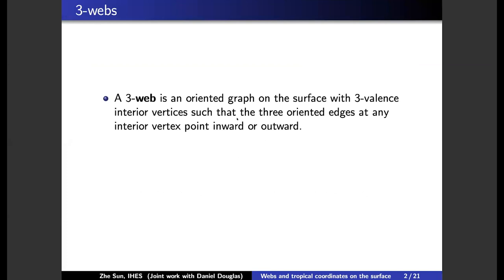A 3-web is an oriented graph on the surface with 3-valence interior vertices such that the three oriented edges at each interior vertex point outward or inward.